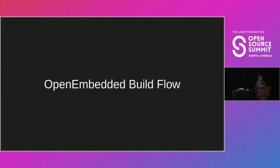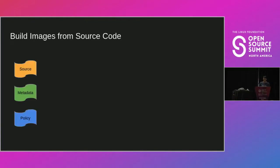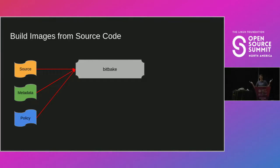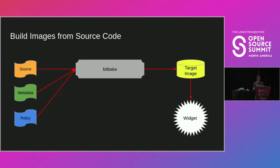I'm going to talk about the OpenEmbedded build flow — how OpenEmbedded builds software and how the way it builds software has an inherent software supply chain to it. When people want to build stuff with OpenEmbedded, they primarily start with three things: the source code they want to build, which comes from Git repositories or tarballs; metadata called recipes, which describes how that source code should be built; and policy information like whether to run systemd or sysvinit. They feed all this into BitBake, and it spits out a target image which you put on your device.